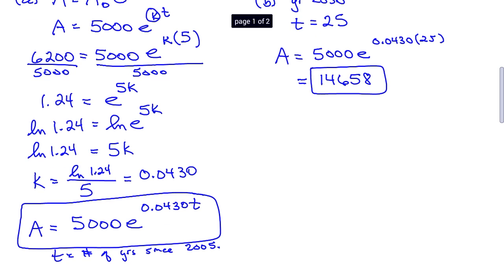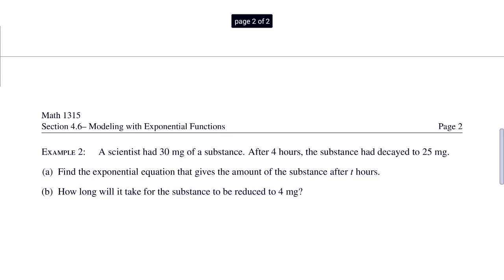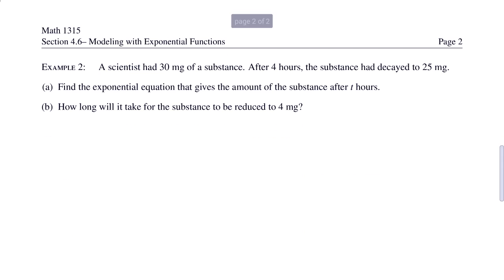Let's look at example two. A scientist had 30 milligrams of a substance. After four hours, the substance had decayed to 25 milligrams. Find the exponential equation that gives the amount of the substance after t hours. And b, how long will it take for the substance to be reduced to four milligrams?